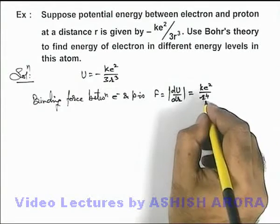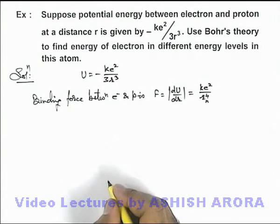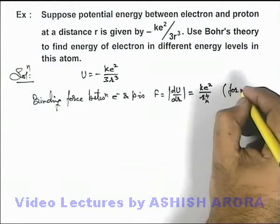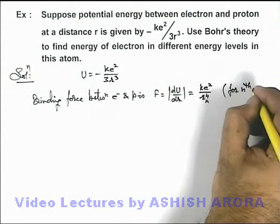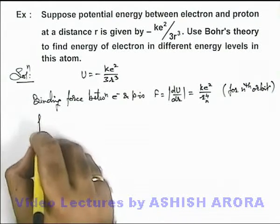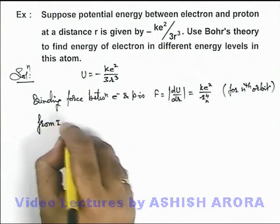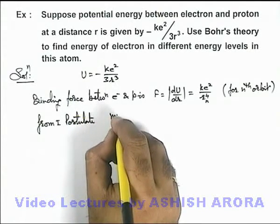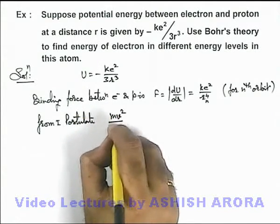For nth orbit we can write r n to power 4. We are writing the force for nth orbit. Now from first postulate of Bohr model we can directly write m v square by r.